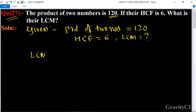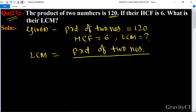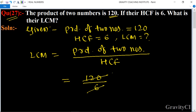We know that the formula for LCM is equal to the product of two numbers divided by HCF. Here, the product of two numbers is 120 and HCF is 6. Dividing, 120 by 6 equals 20, which is the required answer.